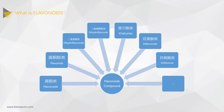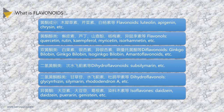There are several significant groups of flavonoid compounds. According to the characteristics of the oxidation degree of the central three-carbon chain and whether the three-carbon chain is ringed or not, flavonoids can be divided into flavonoids, dihydroflavonoids, flavonols, dihydroflavonols, chalcones, diflavonoids, isoflavonoids and other flavonoids.